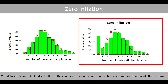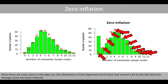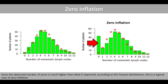This next dataset shows a similar distribution of counts as in our previous example, but we now have an inflation of zeros. Since there are more zeros in this dataset, the distribution of the expected counts has moved a bit to the left since the average count has been reduced. Since the observed number of zeros is much higher than what is expected according to the Poisson distribution, this is a typical case of zero inflation.